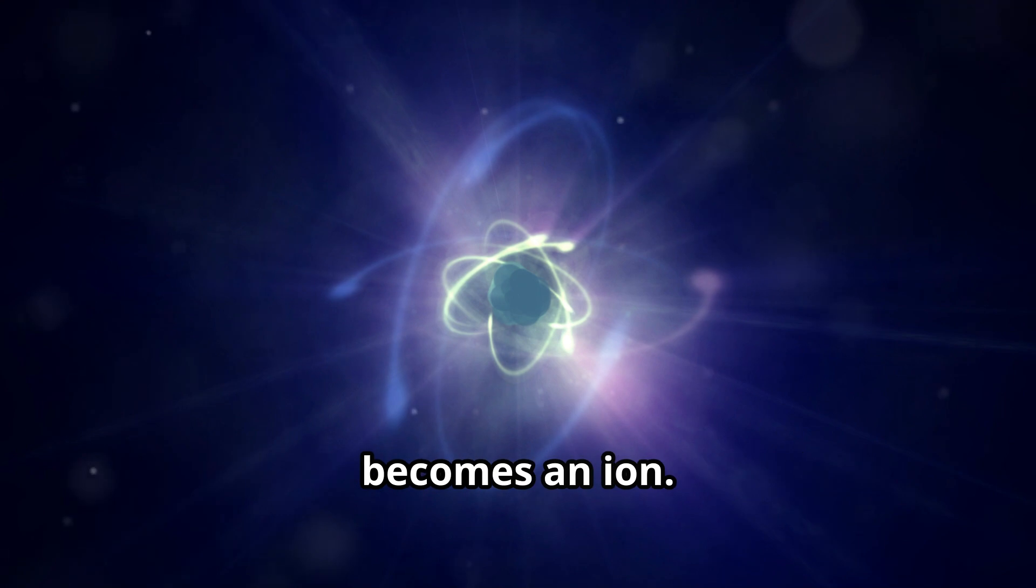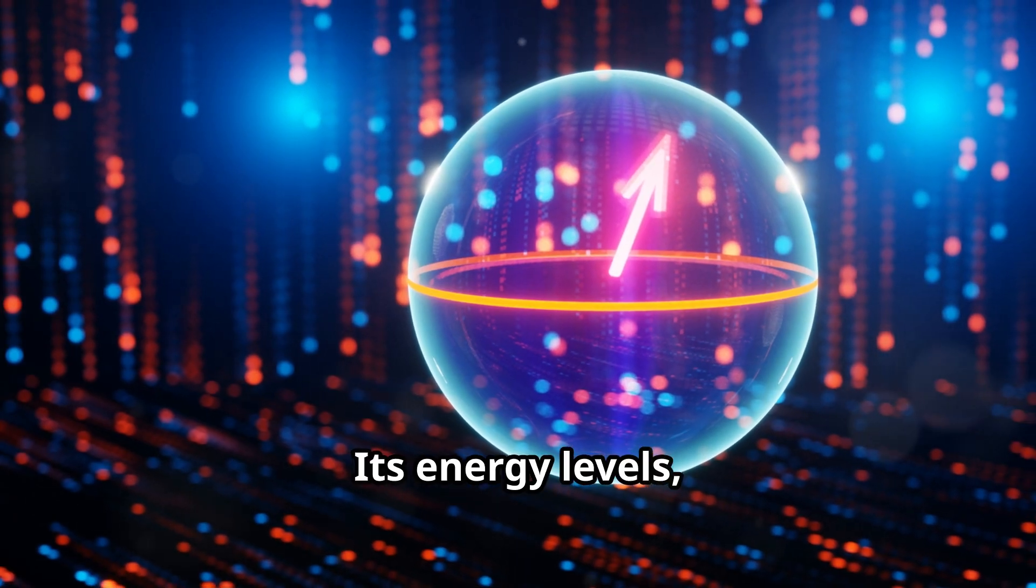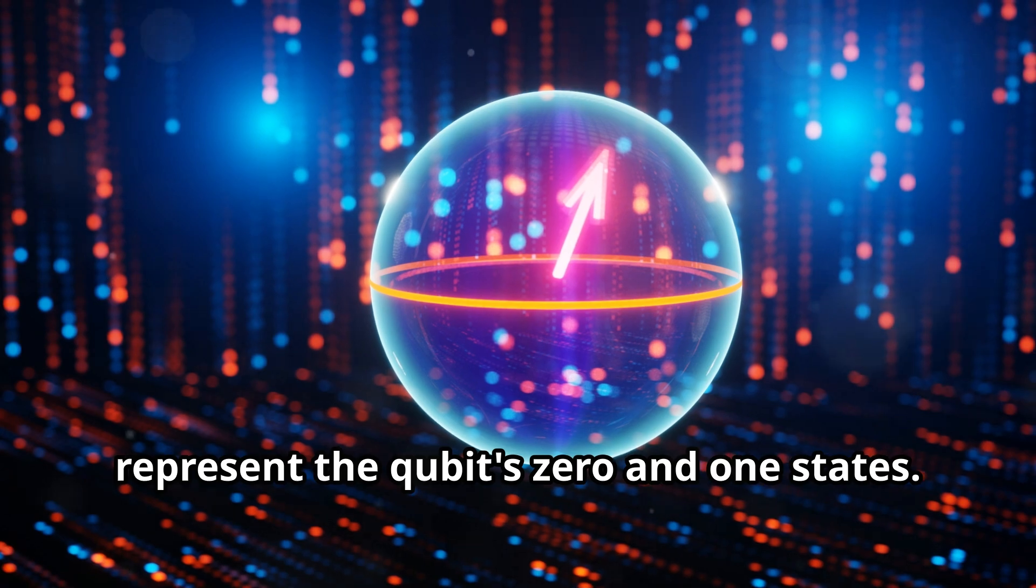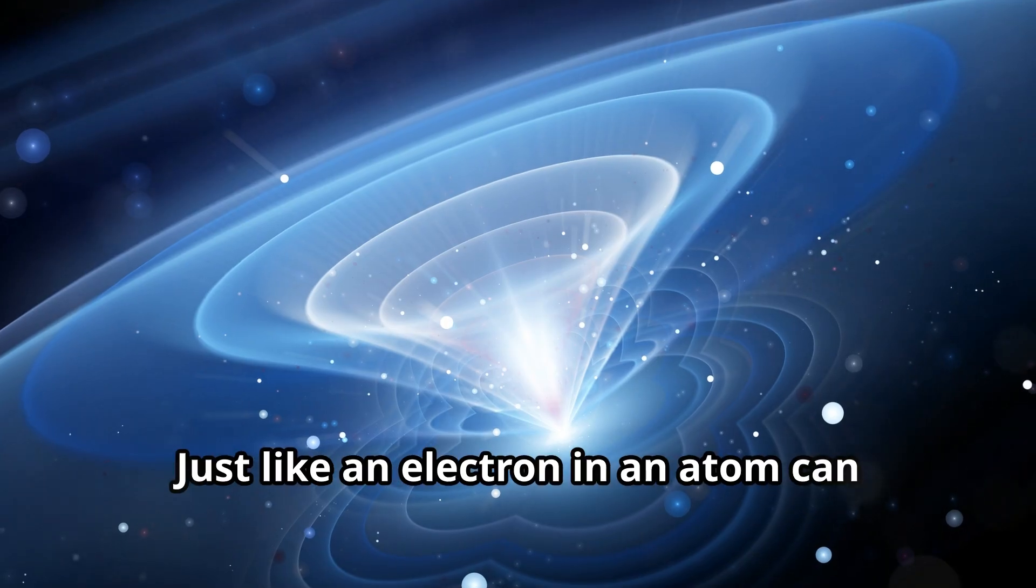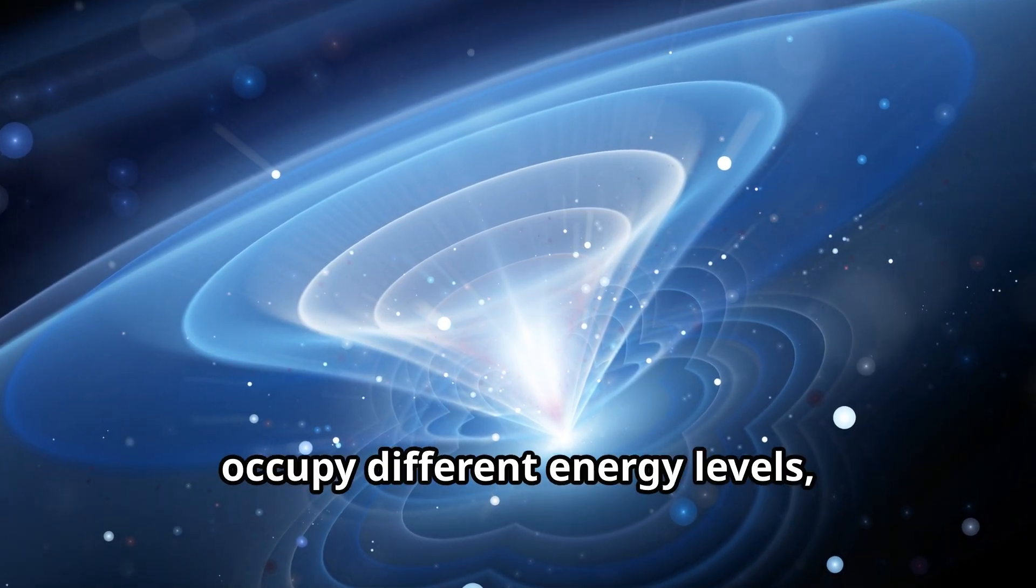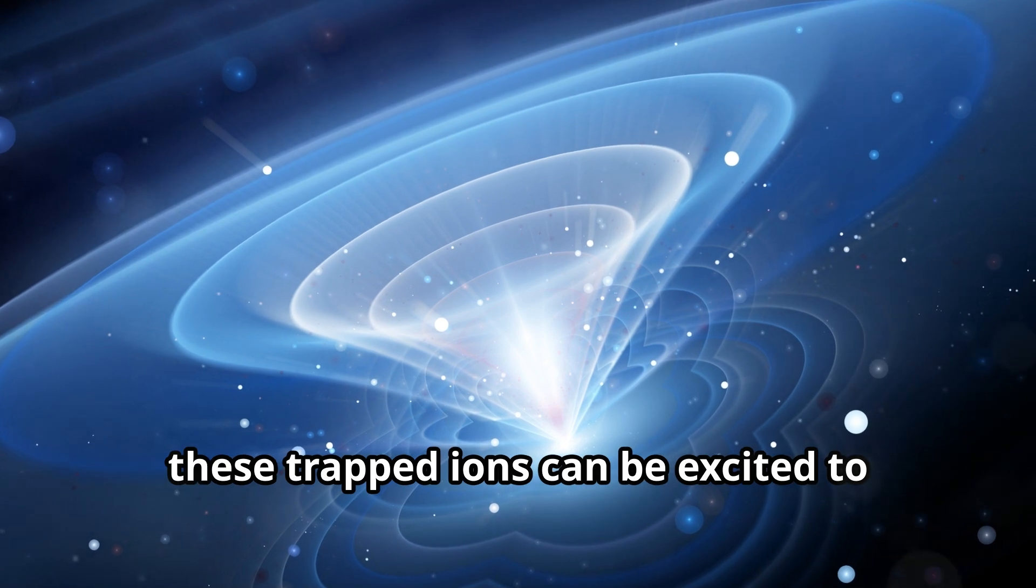Its energy levels, dictated by the laws of quantum mechanics, represent the qubits zero and one states. Just like an electron in an atom can occupy different energy levels, these trapped ions can be excited to higher energy levels and then fall back down, emitting light that reveals their quantum state.